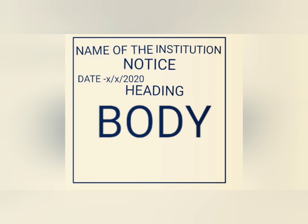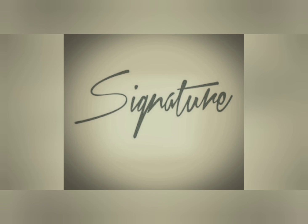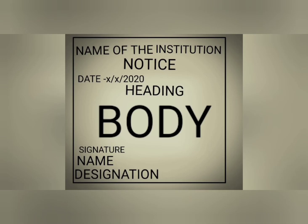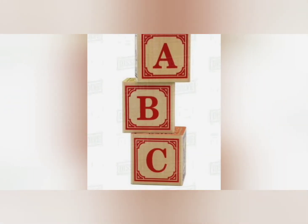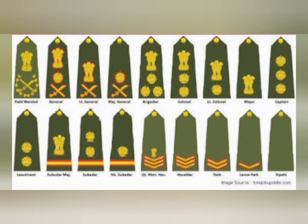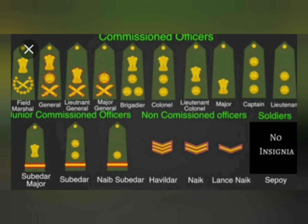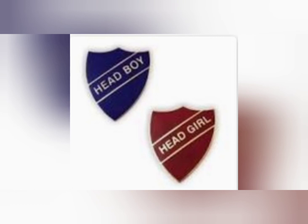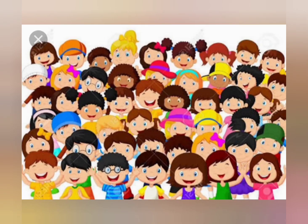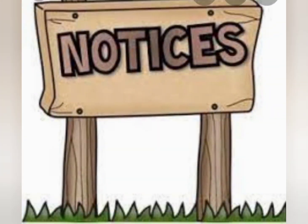At the end of the notice, put the signature of the issuing authority. Just below the signature, write the name and designation of the notice writer. When a name is not mentioned, you have to assume yourself as XYZ or ABC and sign accordingly. Designation is the post of the person who is drafting the notice — like head boy, head girl, librarian, etc. Hope now you have understood all about notice writing.